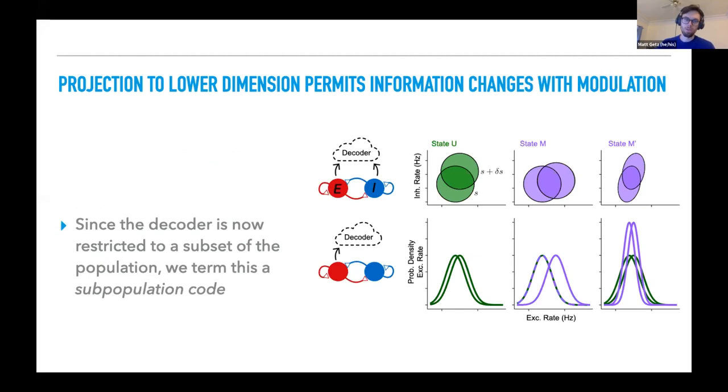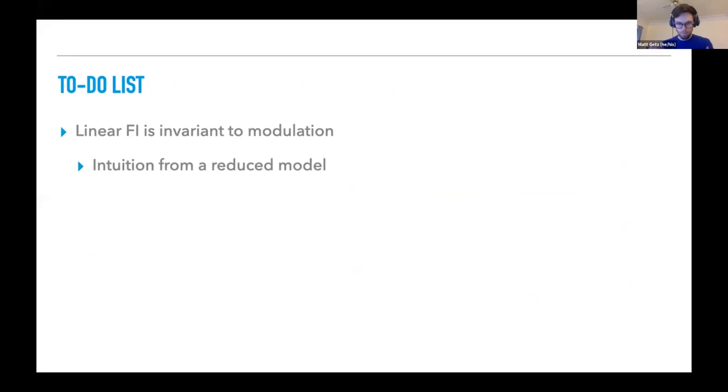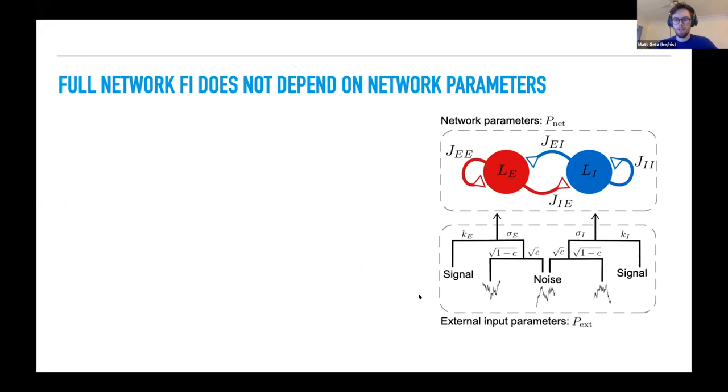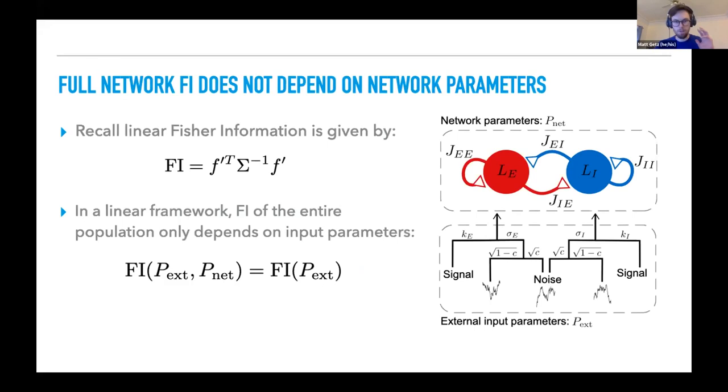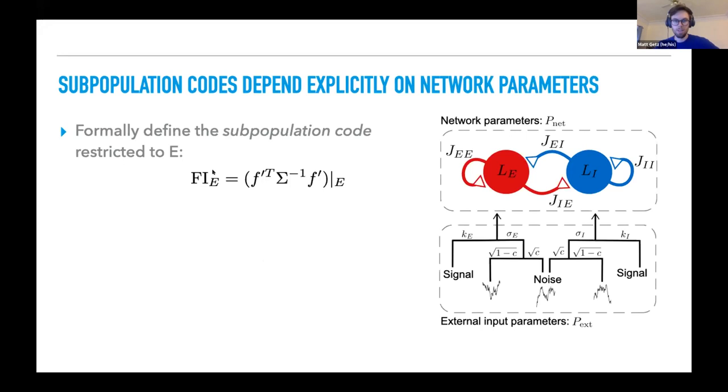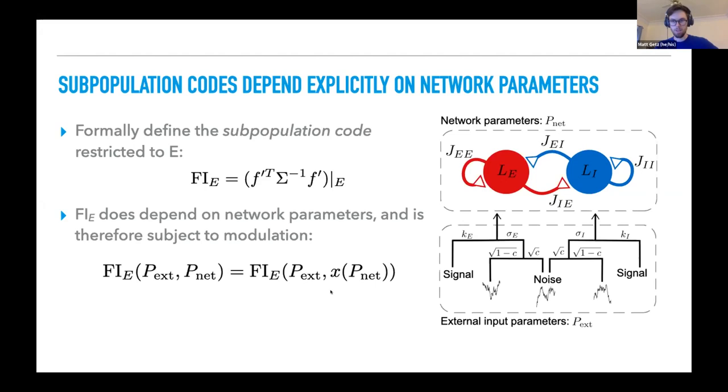Since our decoder is restricted to a subset of the population, we're going to call this a subpopulation code. So we see that FI can change if we consider subpopulation codes, but now we're interested in addressing how can FI change. To that, we're going to parameterize our network. We're basically taking the same model, but now we're writing it down with external parameters that feed into the network and network parameters, which define how the network responds. So again, we'll look at Fisher information. If we write it down for the whole system and work through the algebra, we see that FI only depends on the external parameters, which are not allowed to change with modulation. And so this is why in general, FI is going to be invariant.